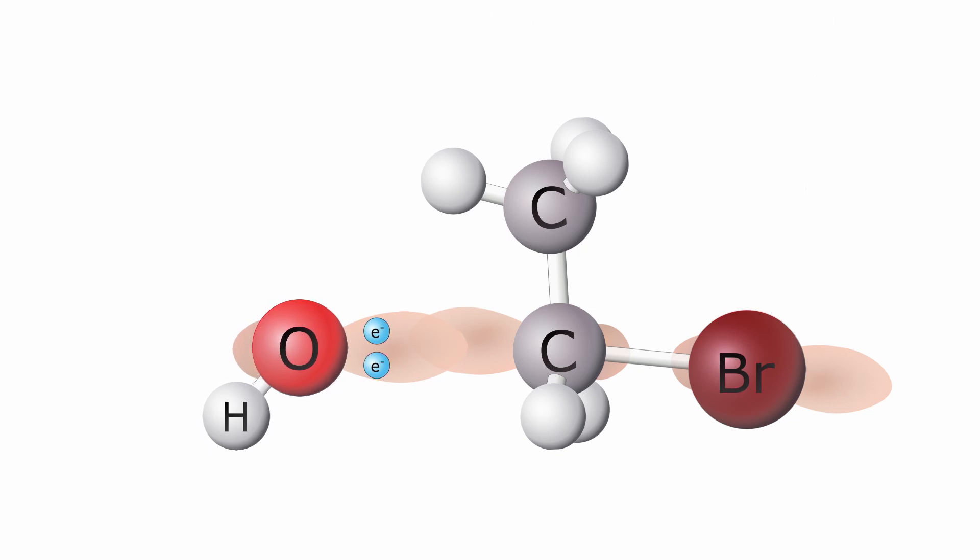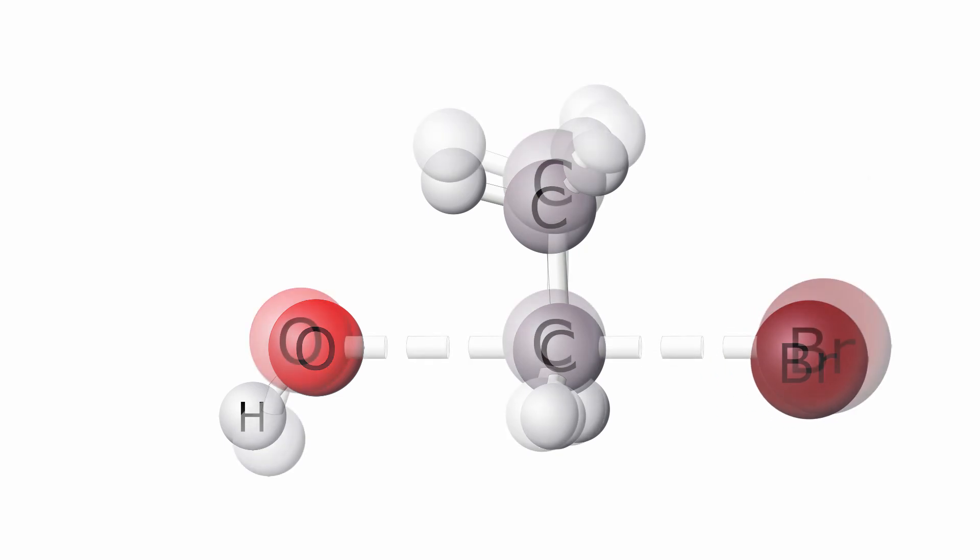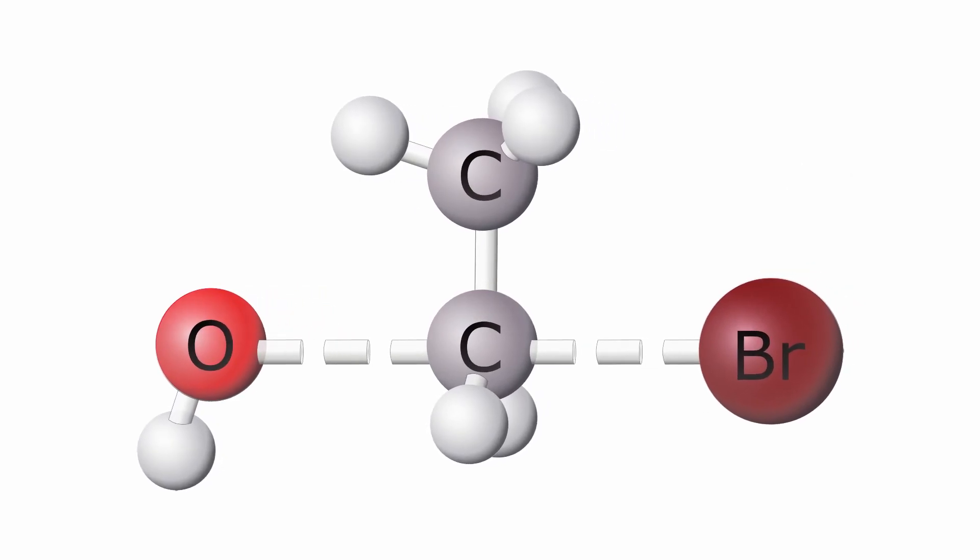As the hydroxide penetrates deeper into the antibond, the bromine, which was once in a happy bond with the carbon, now decides it's time to pack up and leave. As it exits, the transition state for this molecule is formed, with hydroxide coming in from the back and bromine leaving from the front.